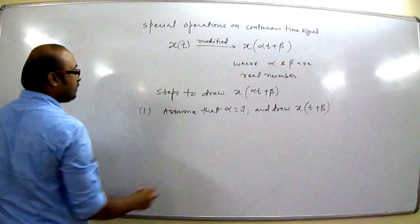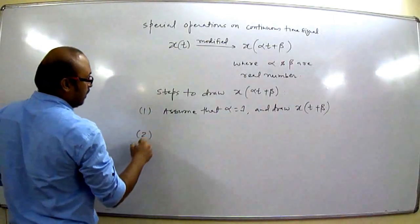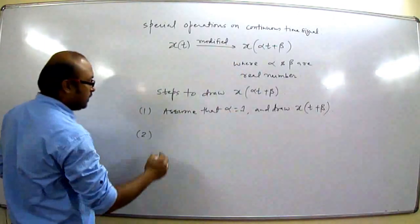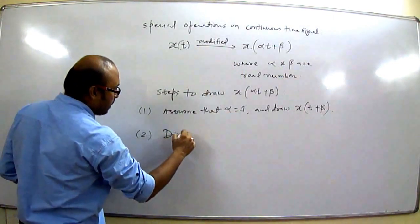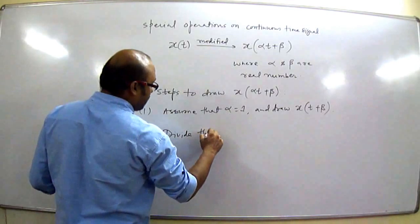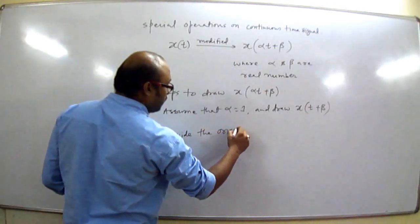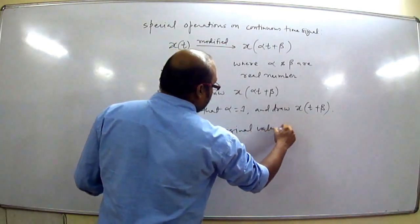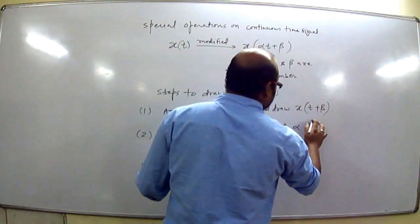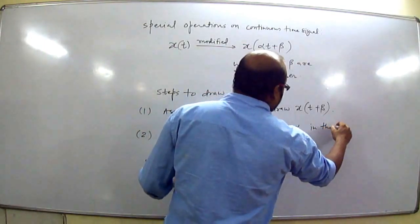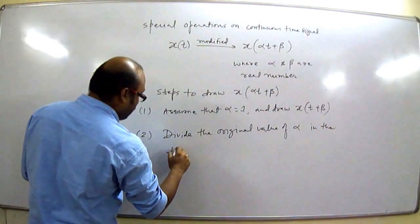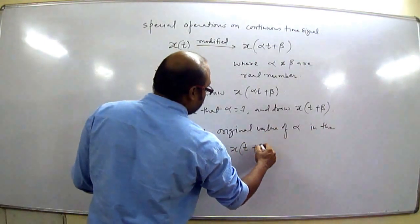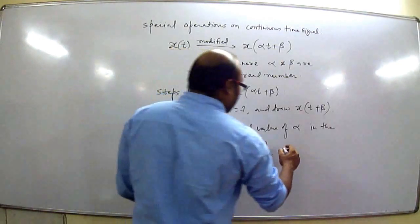If we assume α = 1, then x(αt + β) becomes x(t + β). Now after drawing x(t + β), divide the original value of α in the time axis of x(t + β).